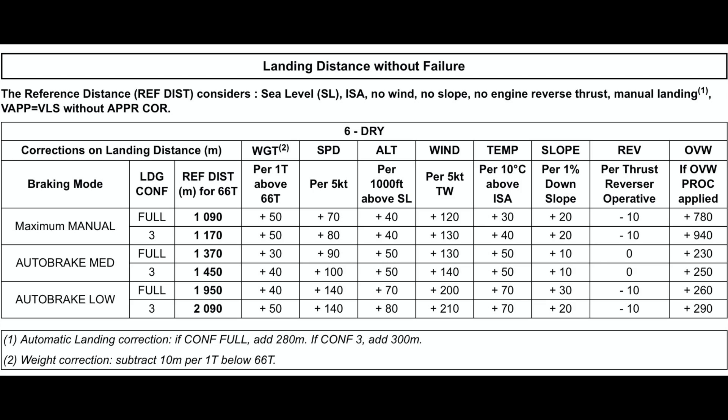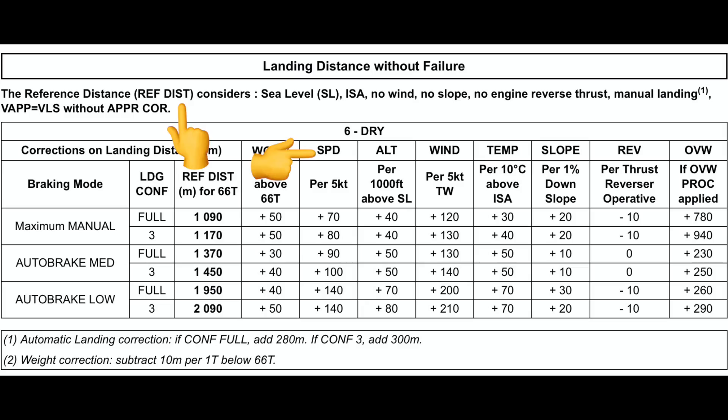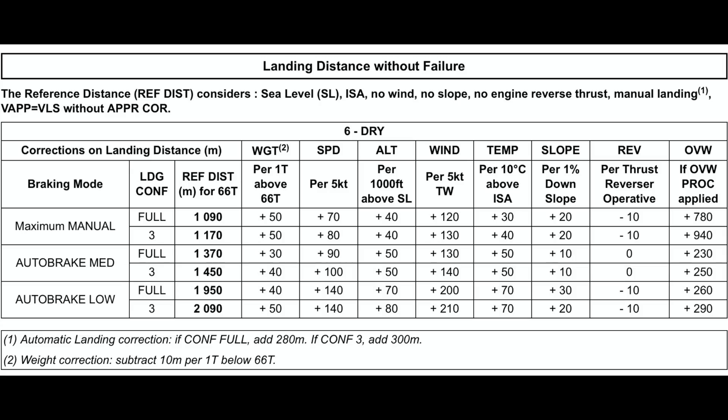What you're seeing on screen is the landing distance calculation table. This table is part of the Quick Reference Handbook, which is a book placed in the cockpit. It has a few checklists, and among those is this table. It is used by pilots to calculate how much runway is required for an airplane to come to a complete stop. There are a lot of corrections and technical terms — I won't go through every one, but I will tell you the important ones.